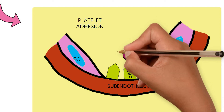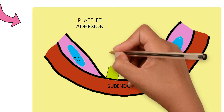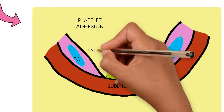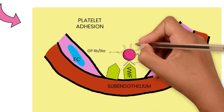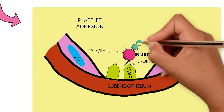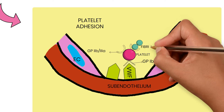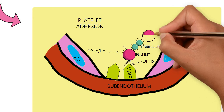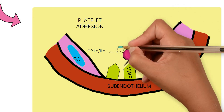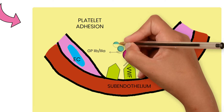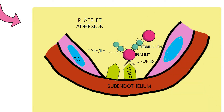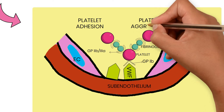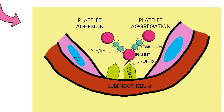Following platelet adhesion, there is activation of platelets, release of platelet granules, and a conformational change in another type of platelet receptor called the glycoprotein 2b3a receptor. This enables fibrinogen to bind to the platelets. At the same time, fibrinogen binds to adjacent platelets, joining them together.